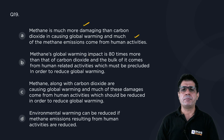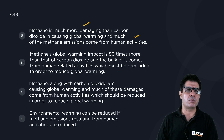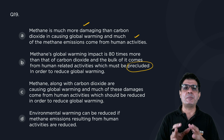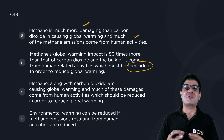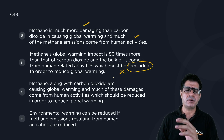Let's look at B. Methane's global warming impact is many times more than that of CO2, and the bulk of it comes from human-related activities which must be precluded in order to reduce global warming. Sounds right, but there is a problem with the word 'precluded.' Precluded means we need to stop those activities entirely, whereas the passage says we need to reduce them. This is a distortion of the paragraph.